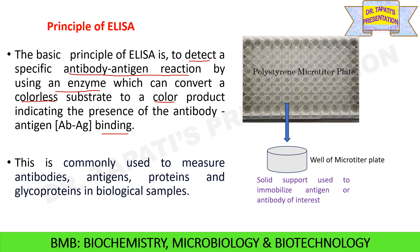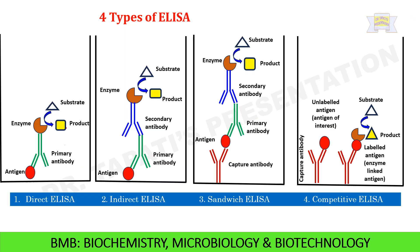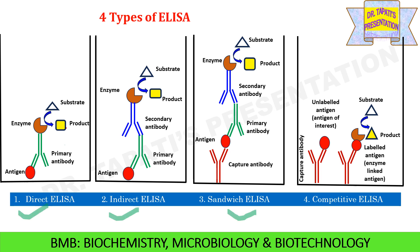ELISA is commonly used to measure antibodies, antigens, proteins and glycoproteins in biological samples. There are four types of ELISA techniques: direct ELISA, indirect ELISA, sandwich ELISA and competitive ELISA. I am going to make a separate video on ELISA and will discuss in detail about these four techniques in that video.